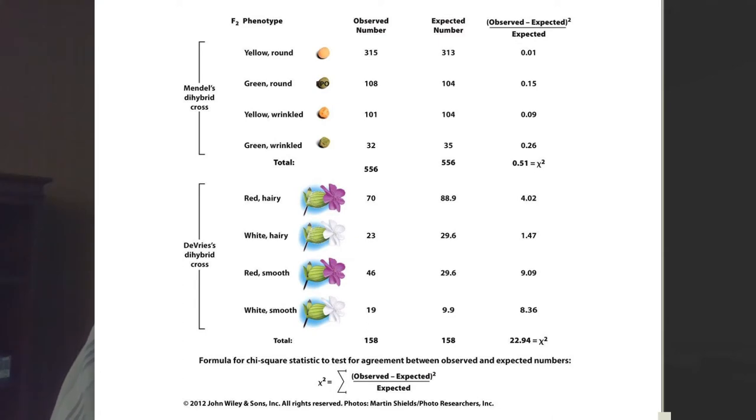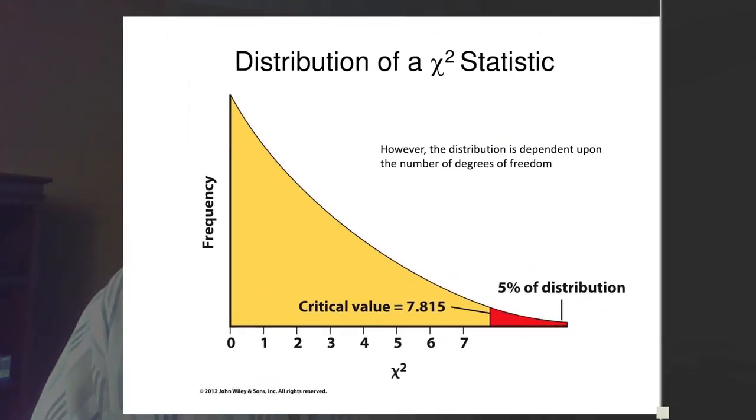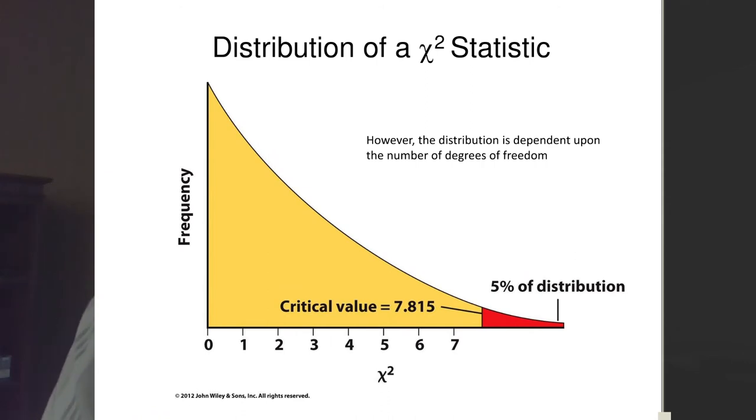Look at de Vries' data. We expected 70, we got nearly 90. Expected 23, got 30. Expected 46, got 30. Expected 19, got 10. Our chi statistic is very large: it's 23. So what does that mean? How can we tell the difference? What does a 0.5 chi-square statistic mean? What does a 23 chi-square statistic mean? We can use the actual distribution—this was really the big contribution by Fisher and Pearson, to look at the distribution of the chi-square statistic.